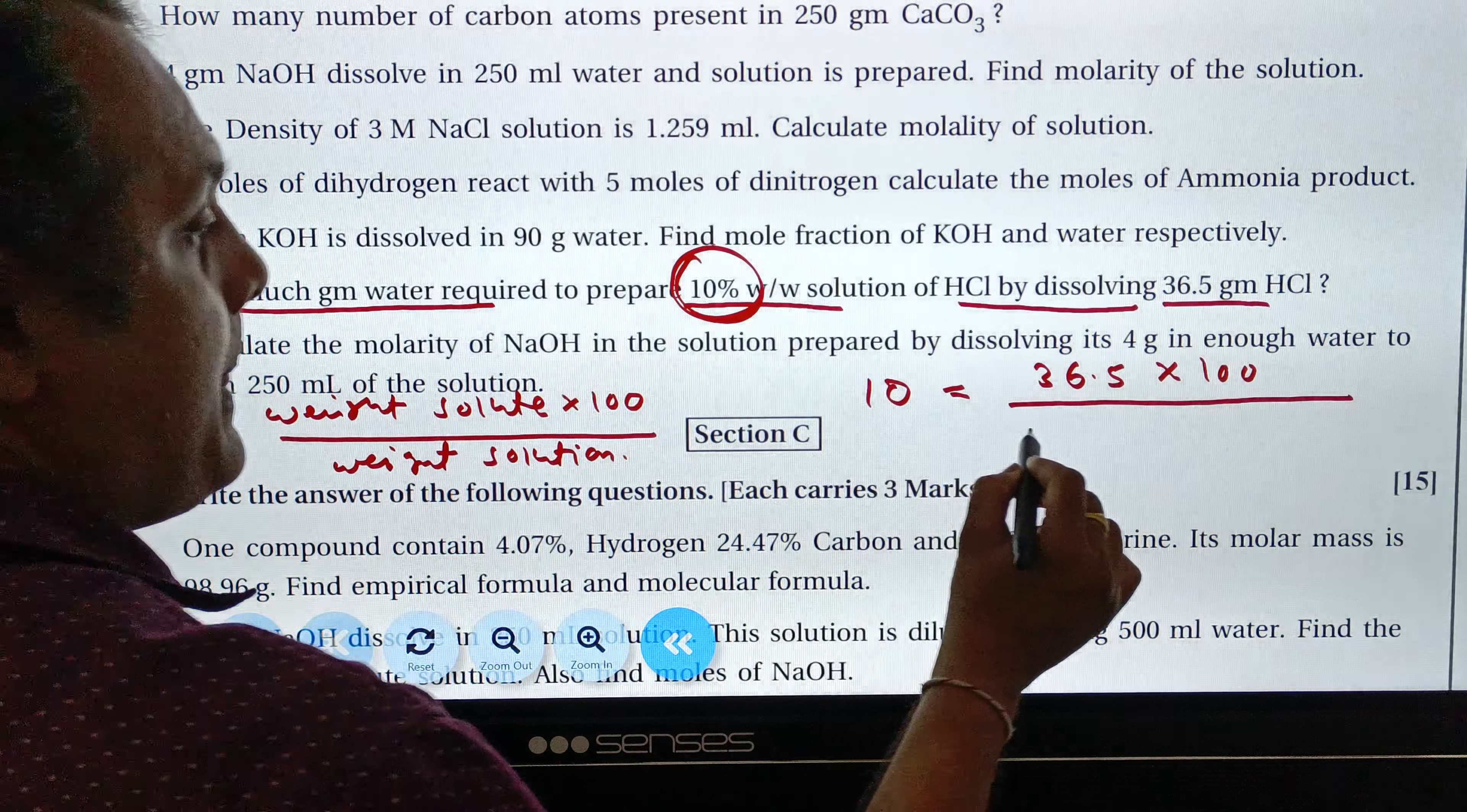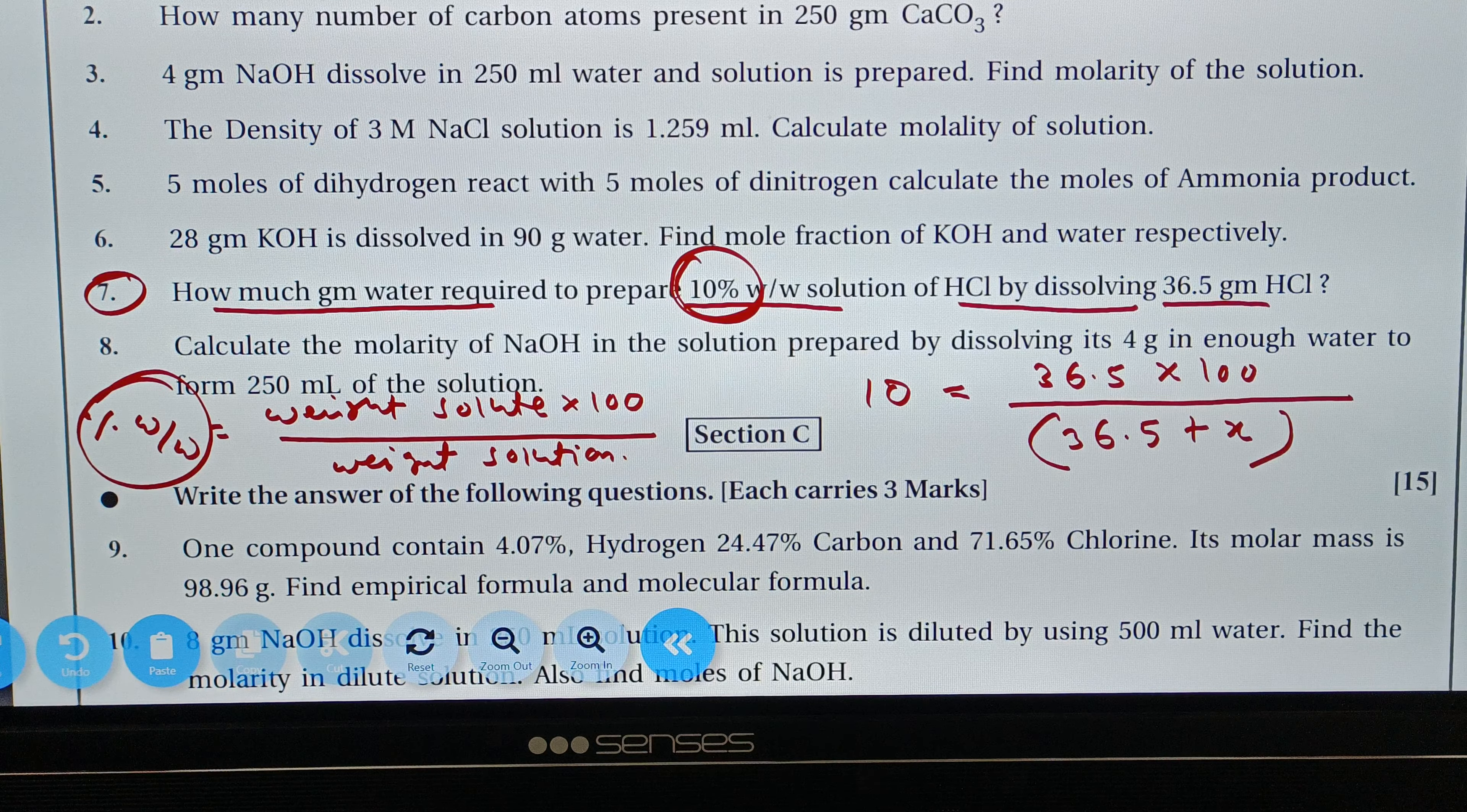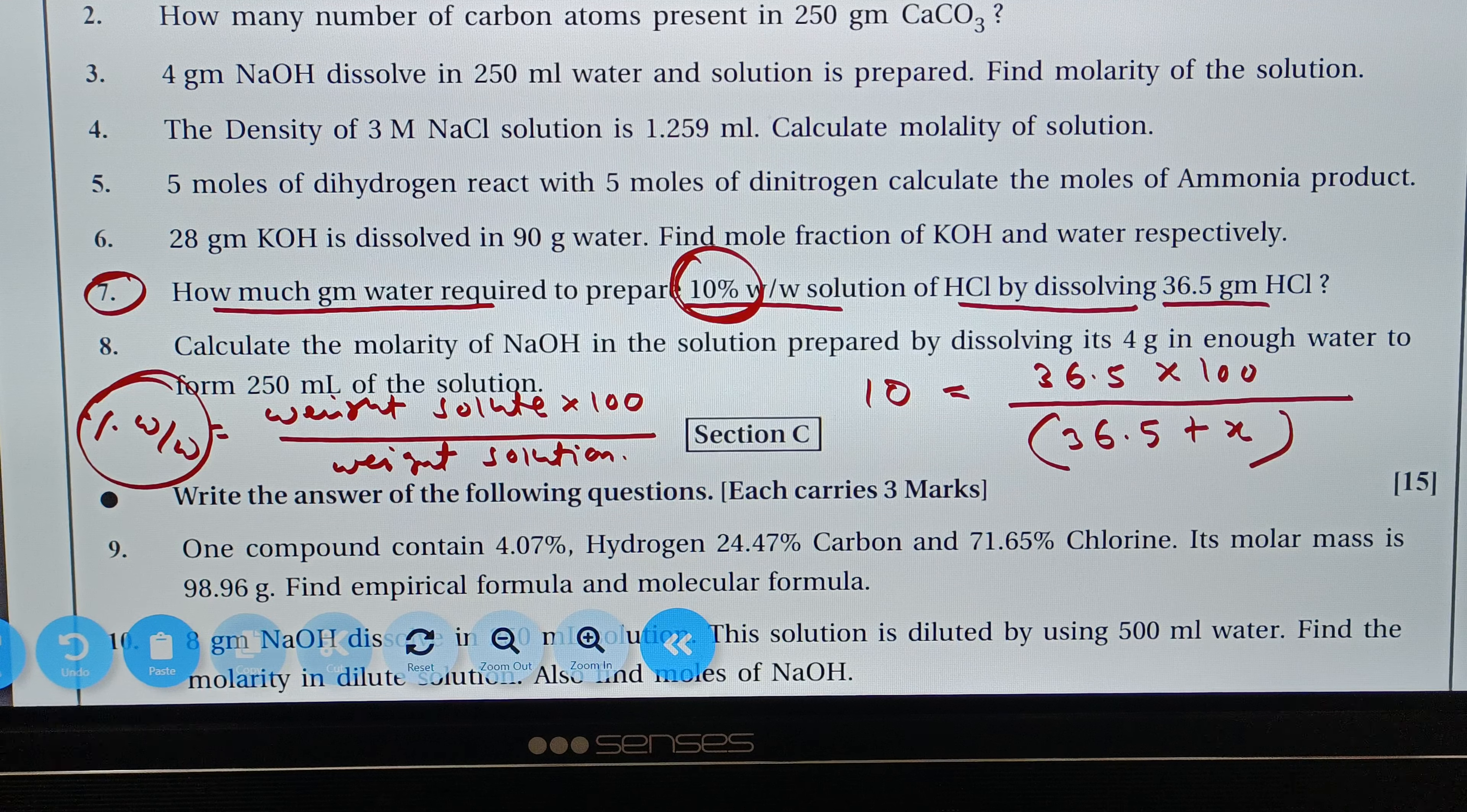So what we will do now? Solute equals 36.5 plus x. Then we solve for x. So this is how much gram water required to prepare.